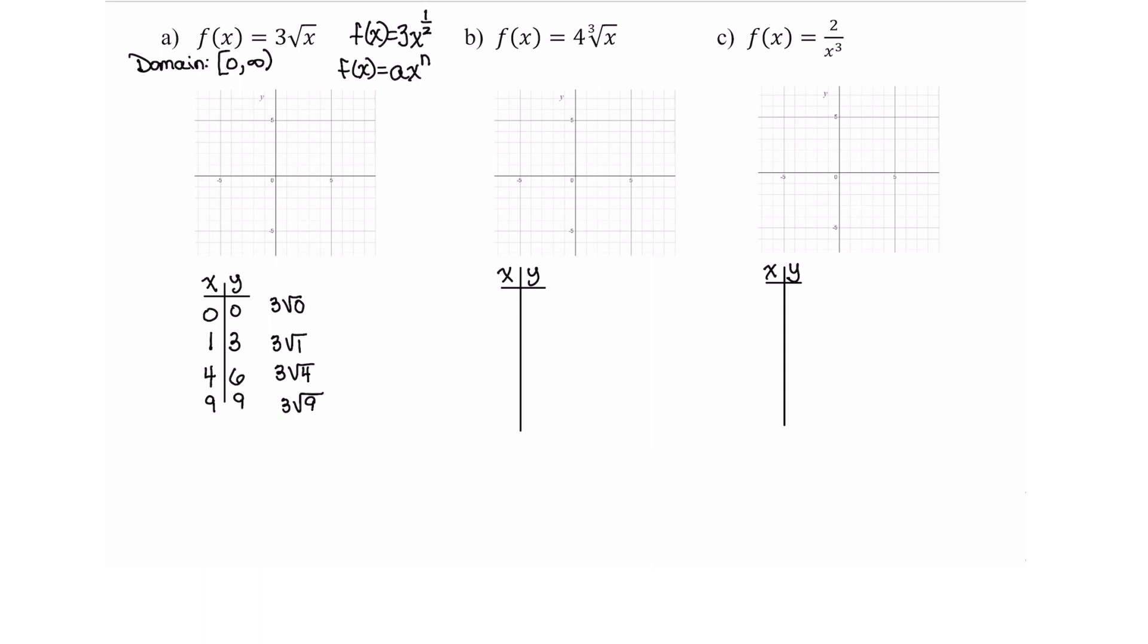Now looking at these, I can plot the points. I have 0, 0. I have right 1 up 3. I have right 4 up 6. And then I have right 9, so here's 5, 6, 7, 8, 9 just on the outskirts there, and then a little bit off the graph if I go up 9. Then connecting these, I get my graph. All right, how about the next one?